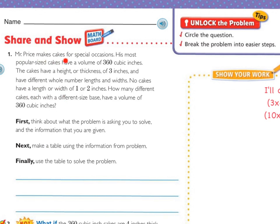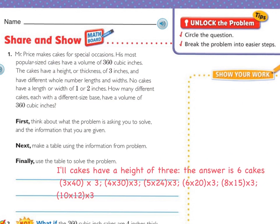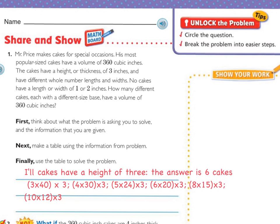Let's share and show. Mr. Price makes cakes for special occasions. His most popular size cakes have a volume of 360 cubic inches. The cake has a height of 3 inches and has different whole number lengths and widths. No cake can have a length or width of 1 or 2 inches. How many different cakes with different size bases have a volume of 360 cubic inches? First, think about what the problem is asking, then make a table using the information, then use the table to solve. All of the cakes had to have a height of 3. The answer is 6 cakes.